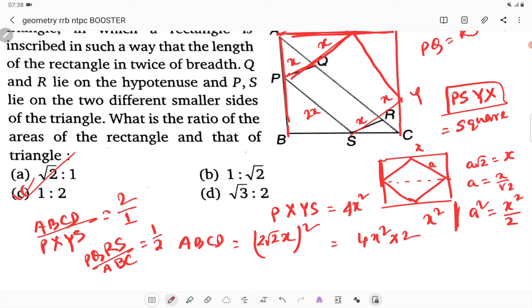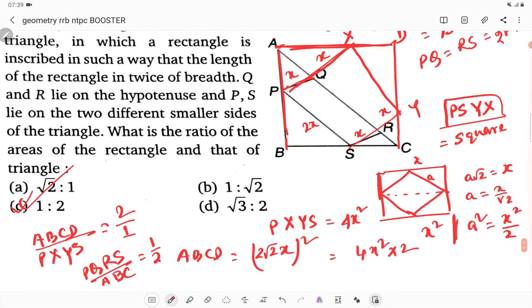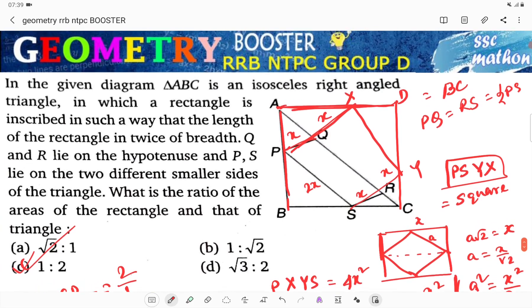So option C is the correct answer. We just inverted it, because both had to be halved. Thank you, bye bye, stay tuned for the next class.